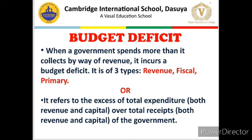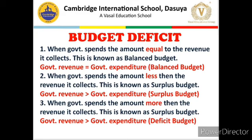Budgetary Deficit can also be studied in a more detailed way. When Government Revenue equals Government expenditure, it is known as a Balanced Budget. When Revenue and expenditure are not equal, it creates a situation of Unbalanced Budget. When Government spends less than the revenue it collects — expenditure is less and income is more — this is known as a Surplus Budget, where Government Revenue is greater than Government expenditure.